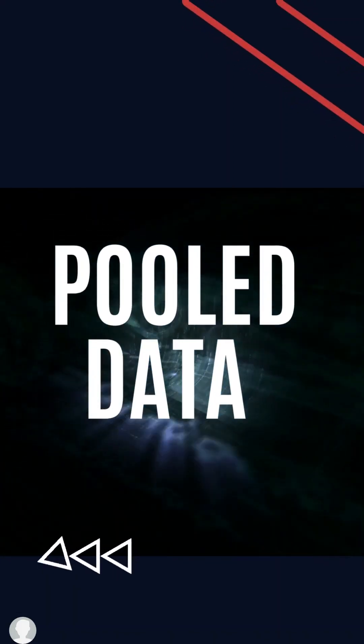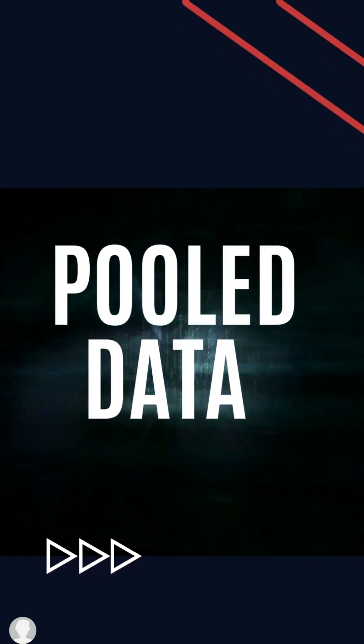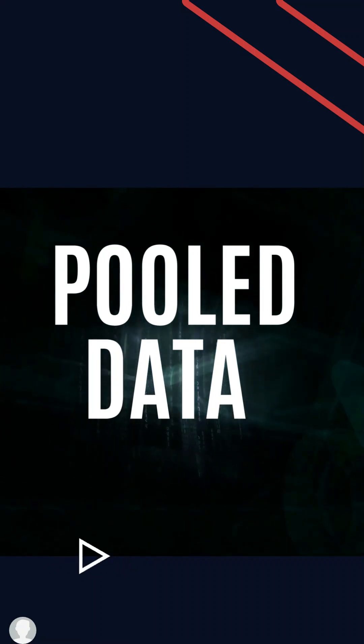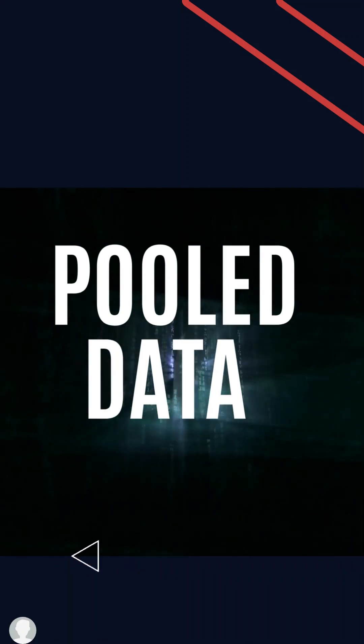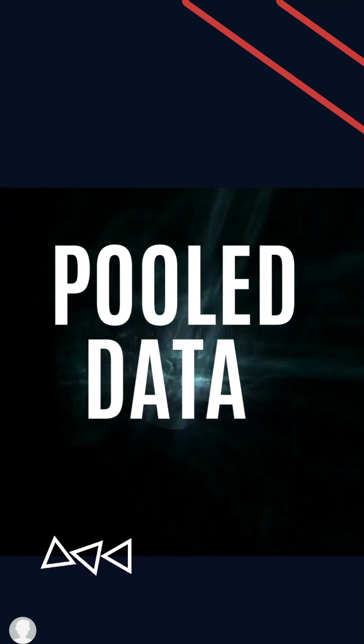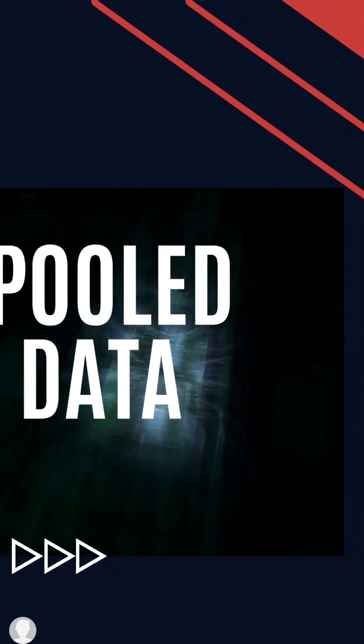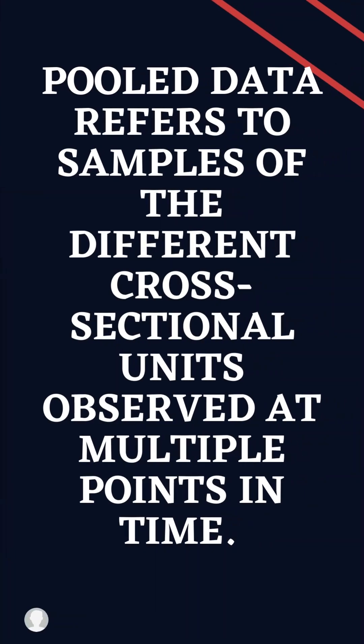Pooled data is a type of data. It is a mix of time series and cross-sectional data, and it is different from panel data in that pooled data studies different cross-sectional units over time. Pooled data refers to samples of different cross-sectional units observed at multiple points in time.